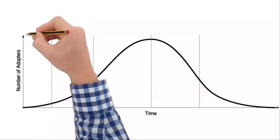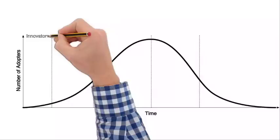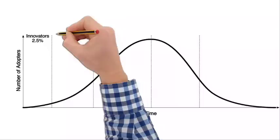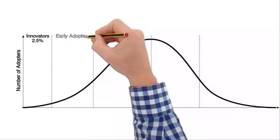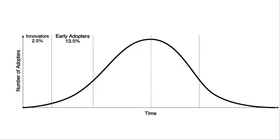The early and late majority are so called for their impact on adoption rates. By the time the early majority have adopted an innovation, it has a critical mass of support, 50% of the population.